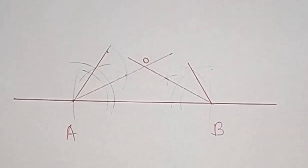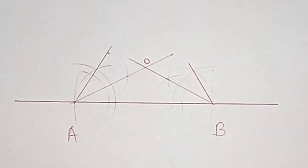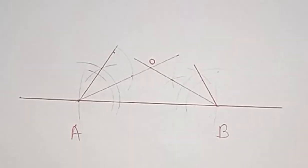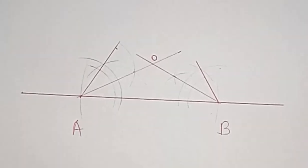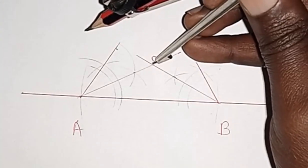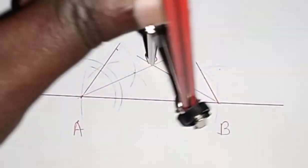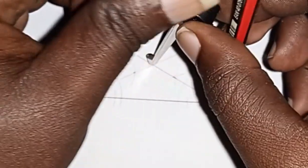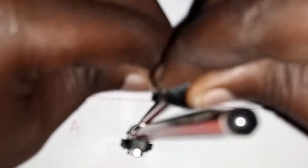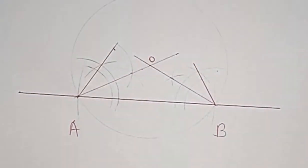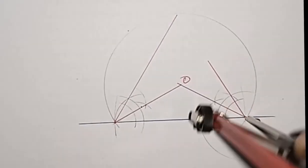The two angle bisectors intersect at point O, which will be the center of the circle. Draw a circle using the distance from point O to either point A or point B as the radius. Repeat the same process below line AB to draw the circle on the other side as well.